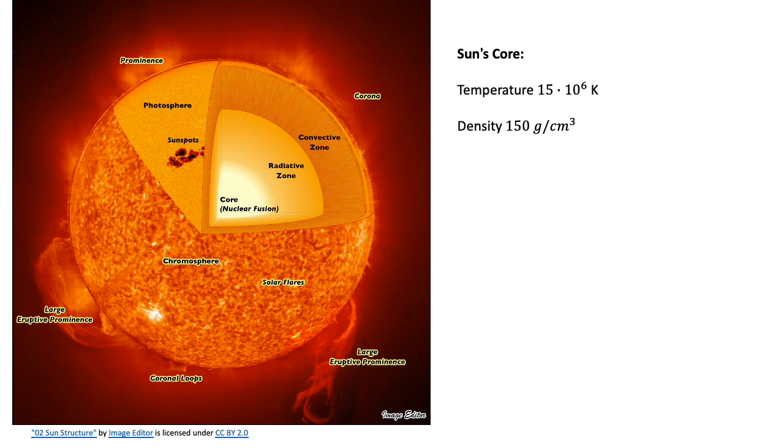But according to classical physics, this would still be insufficient to overcome the Coulomb potential and allow nuclear fusion to take place. Because the hydrogen nuclei repel each other, we need to ensure there is enough energy to overcome the repulsion. Even in the sun's core, fusion would not occur if it were not for quantum tunneling.